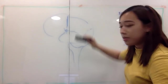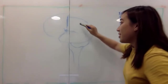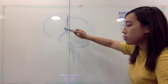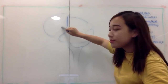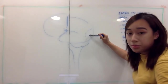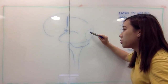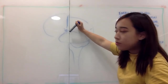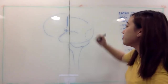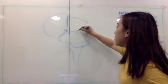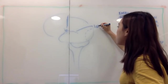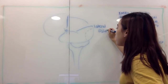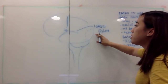So we have: parietal, temporal, frontal, and occipital lobes. Inside this fissure — which is known as the lateral fissure — there are two big fissures to remember, and inside this one, you have a cortex called the insula.